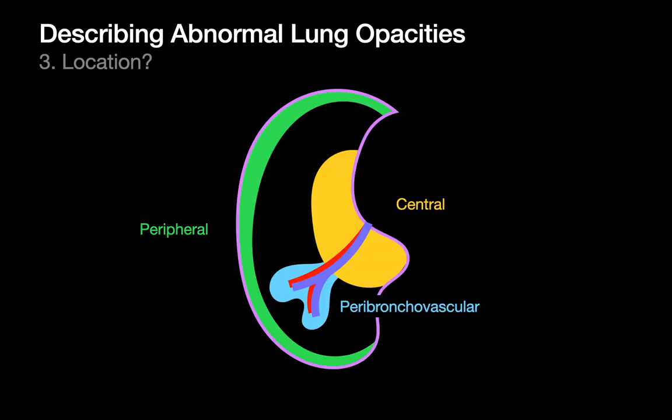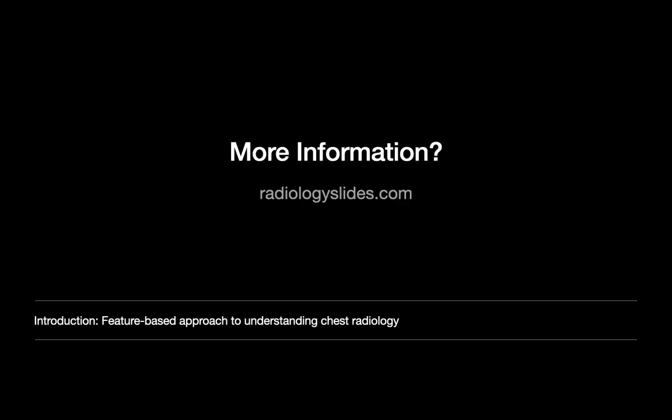One quick thing about CT scans: we can always localize things in terms of segment and lobe, but sometimes describing the relationship relative to the lung's general anatomy is useful. Three terms I find useful are central versus peripheral, and then the term peribronchovascular, if I'm seeing a phenomenon that seems to be hugging the bronchovascular bundles.